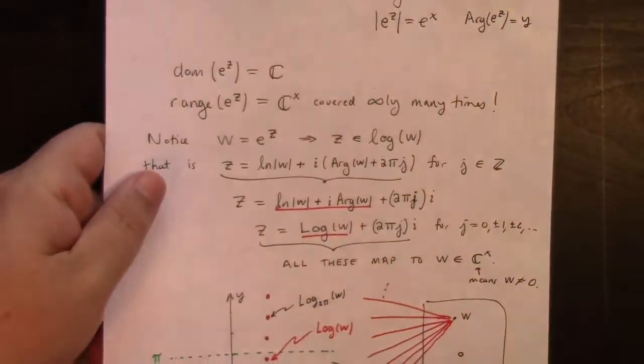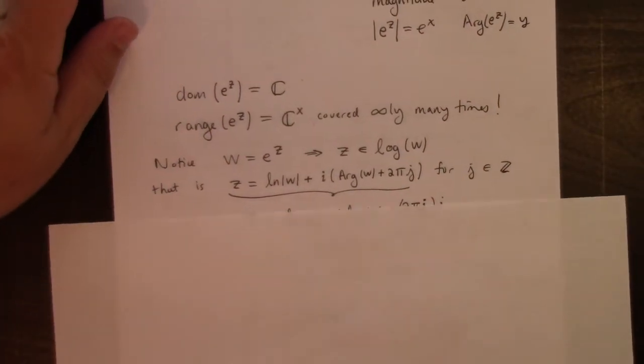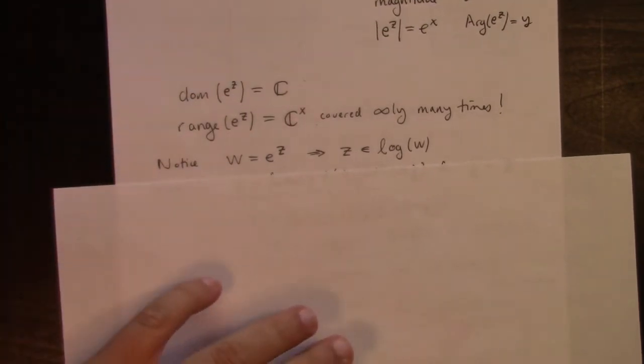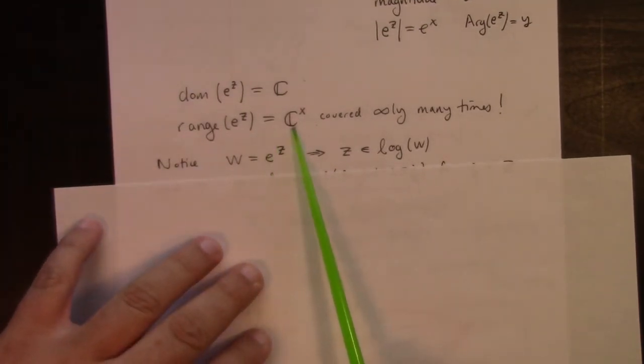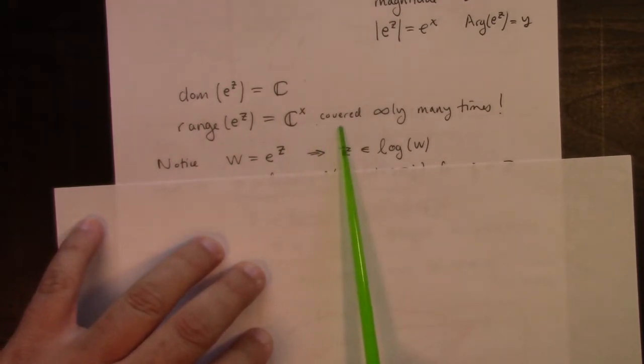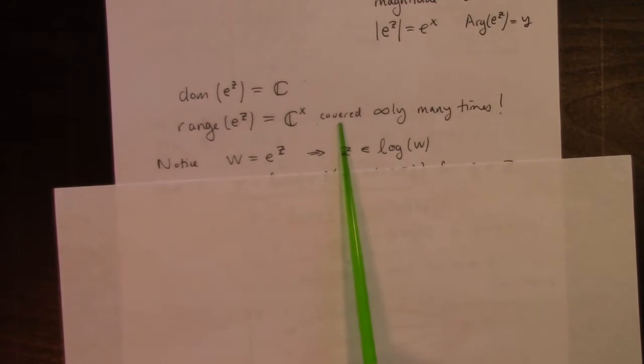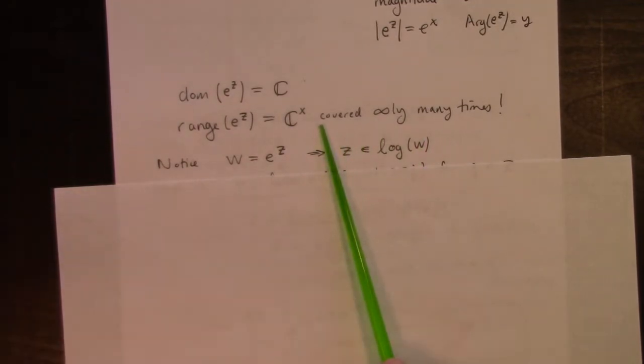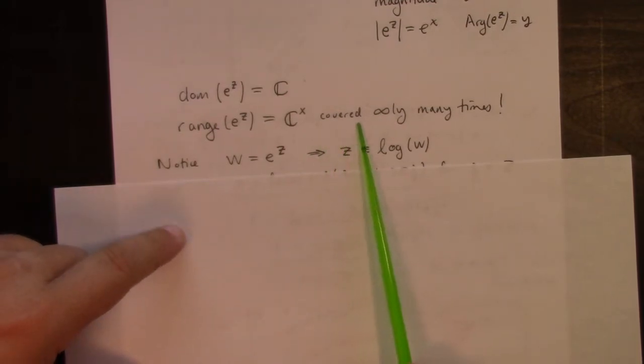I would point out that the range is not just non-zero complex numbers, but every non-zero complex number is hit infinitely many different times, by infinitely many different inputs mapping through the exponential. In other words, the range of the exponential covers the non-zero complex numbers infinitely many times.